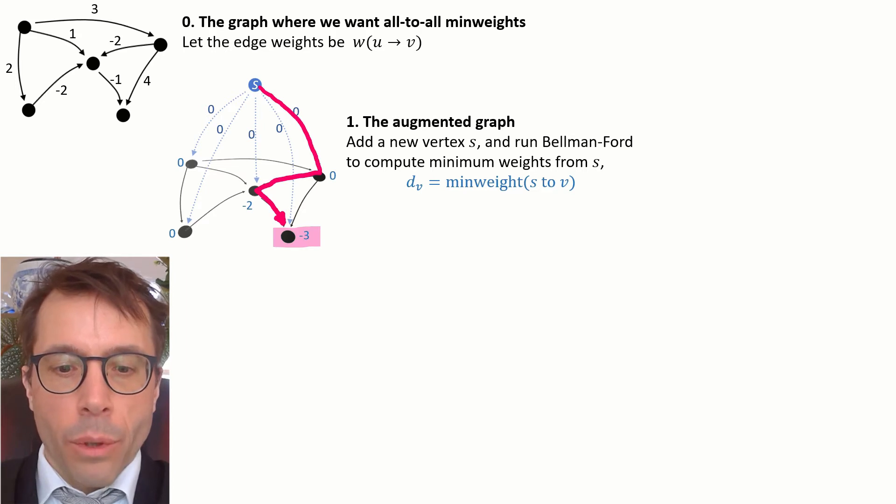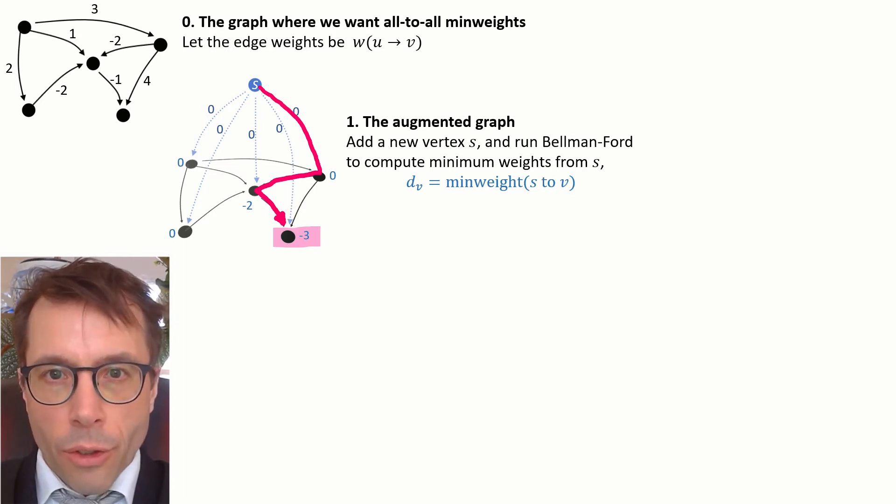And on this graph we'll run Bellman-Ford to find the minimum weights from s. So for example, if we look at this vertex here, there's a path from s to this vertex of weight 0 plus minus 2 plus minus 1. That's the minimum weight path. So we give this vertex a value minus 3.